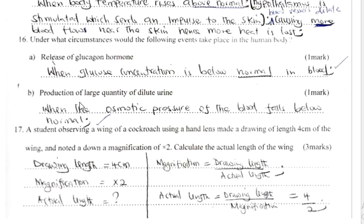Part B: Production of a large quantity of dilute urine occurs when the osmotic pressure of blood falls below normal.